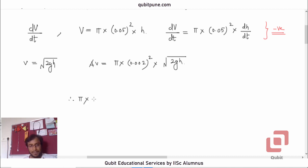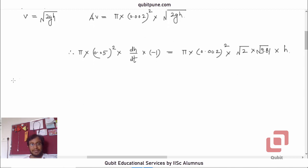Therefore, π × (0.05)² × dh/dt with a negative sign, so into negative 1, equals π × (0.002)² × √(2 × 9.81 × h). Now this is actually a variables separable differential equation. So we can separate the variables and solve the problem.